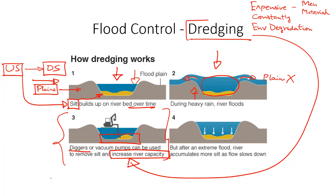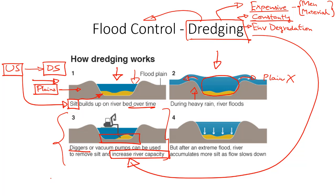Dredging as a flood control technique is quite effective, but it has a number of drawbacks. It is quite expensive because a lot of investment has to be made in men and material. The dredging activity has to be carried out constantly, especially before and after the rainy season. Along with this, dredging is known to be harmful to the environment as it leads to severe environmental degradation.